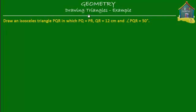Welcome to homecampus.com.sg. Let's draw another triangle. Draw an isosceles triangle PQR in which PQ is equal to PR, QR is equal to 12 centimeters, and angle PQR is equal to 50 degrees.